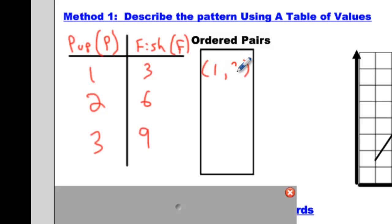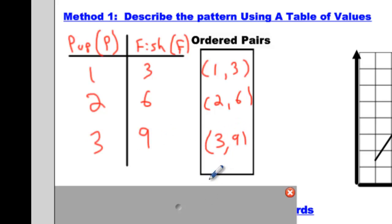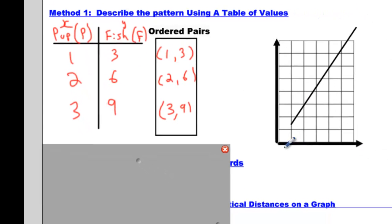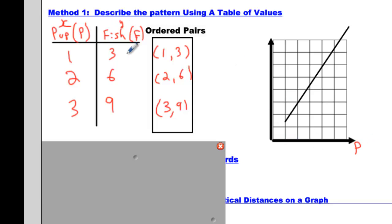We can take this data and make a table of values: we write 1, 3; then 2, 6; and here's 3, 9. Some of you are thinking, 'You said the first number is x and we don't have x, we have p and f.' Well, you could think of p as the x and f as the y. So pup will go on the x-axis and fish will go on the y. Now we just have to plot the points.